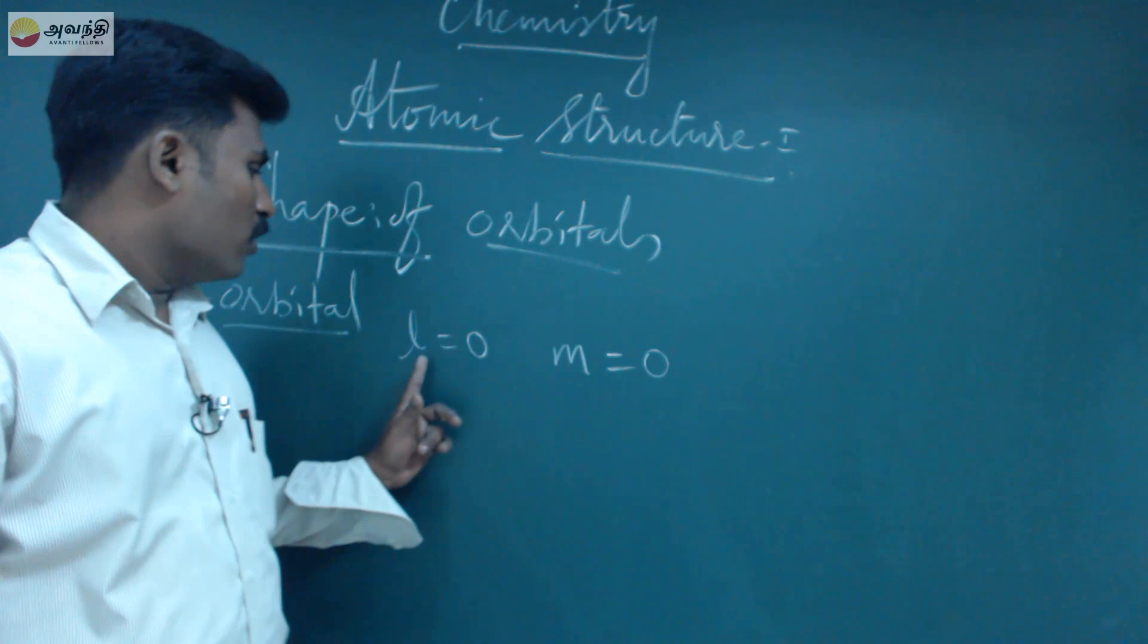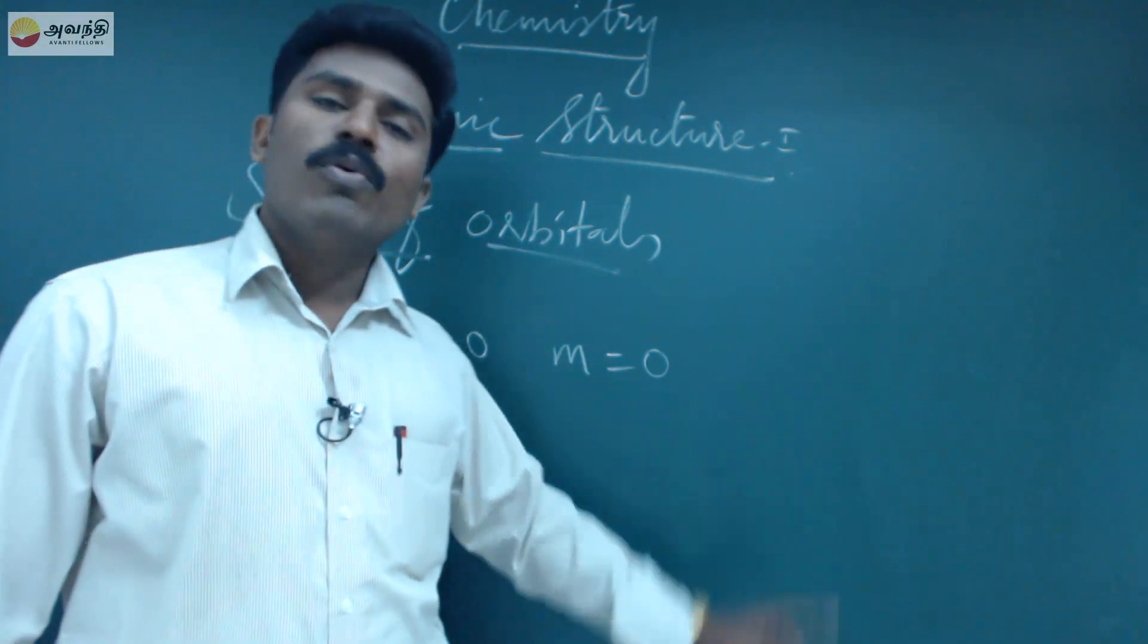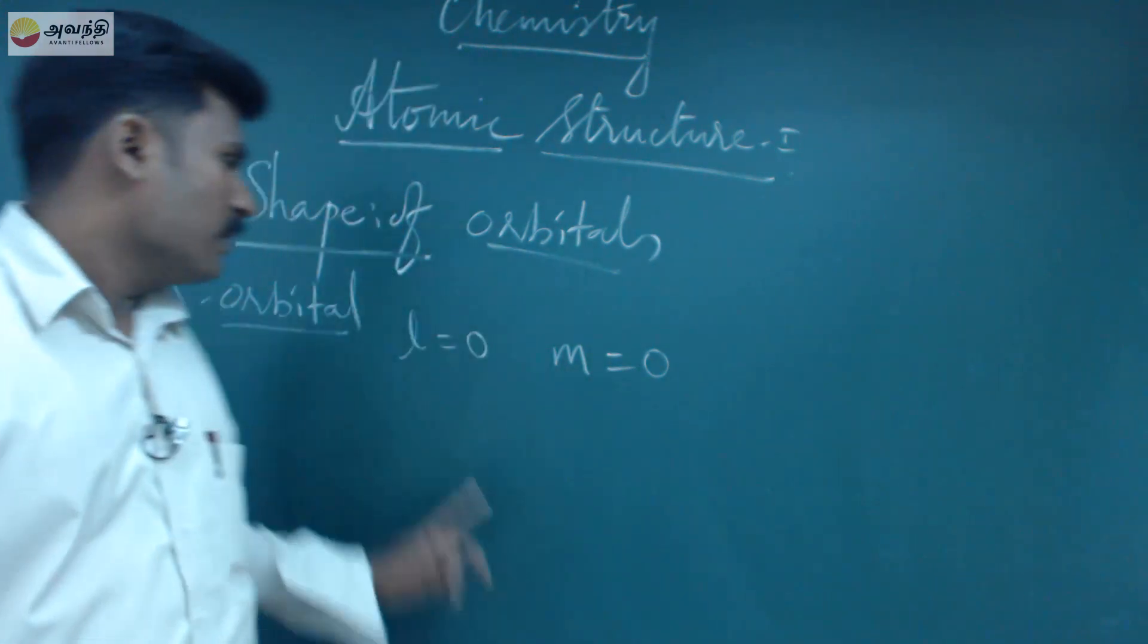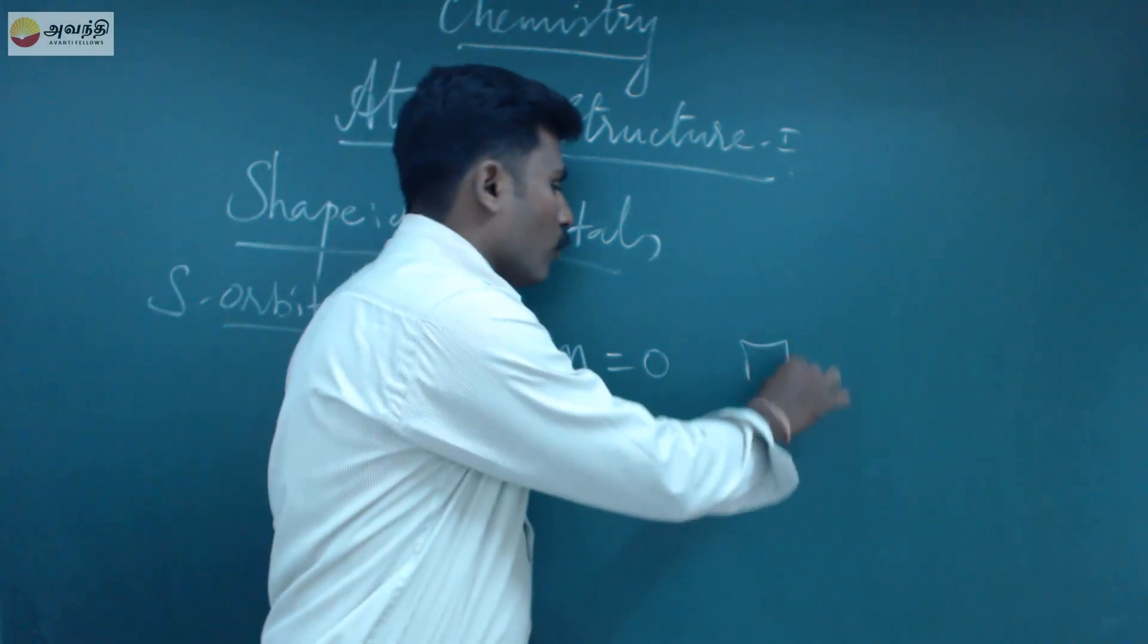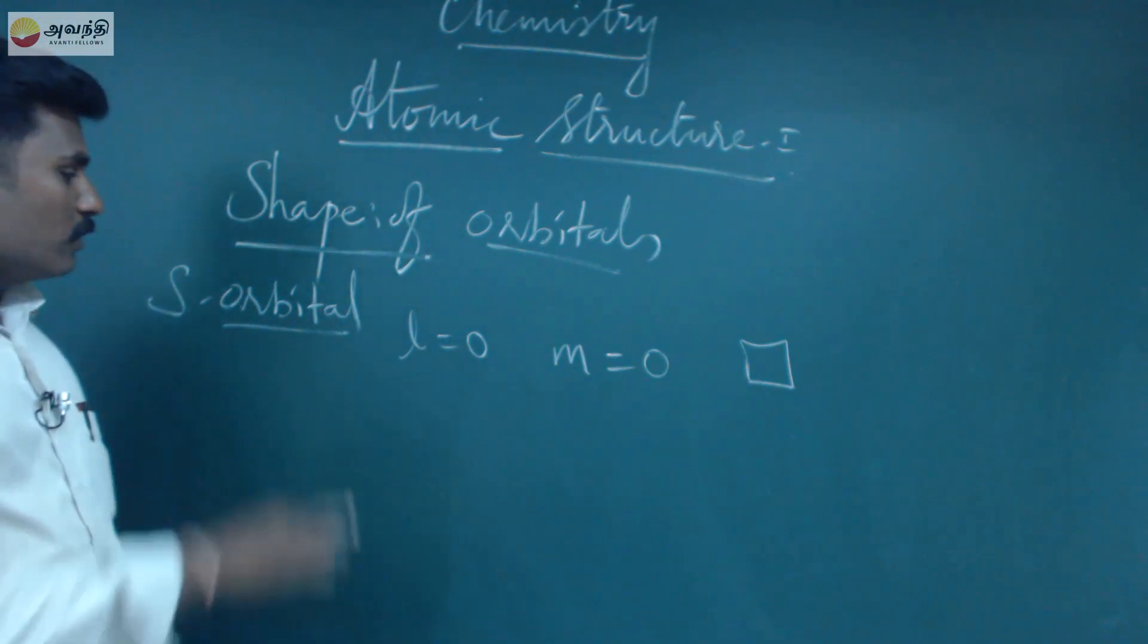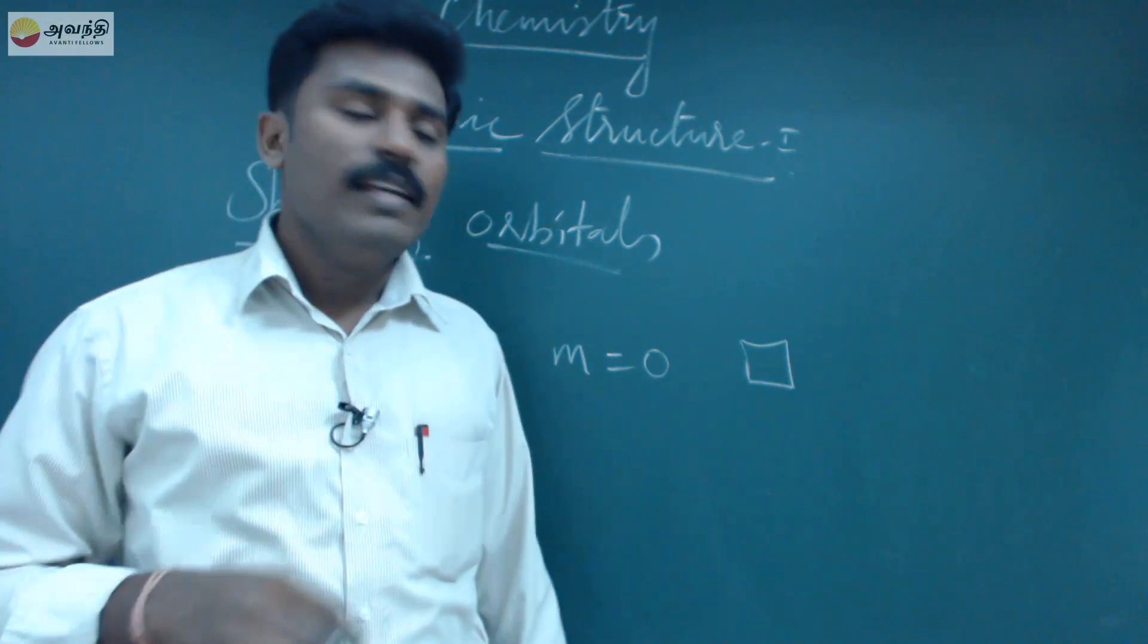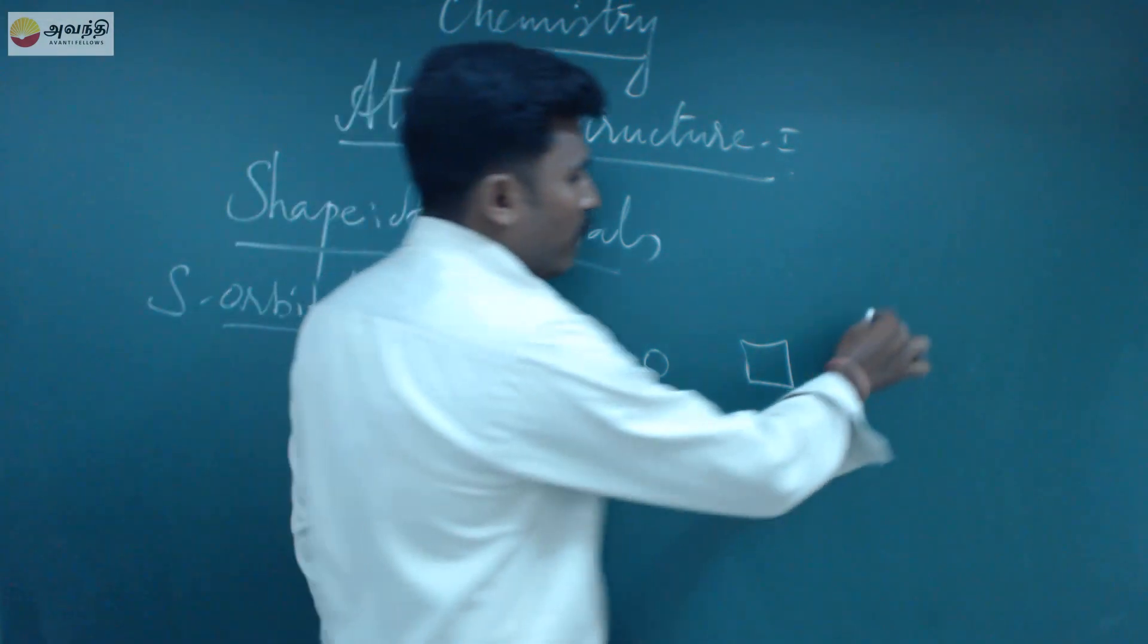For azimuthal quantum number zero, the magnetic quantum number is also zero, meaning there is no orientation. This indicates the s orbital becomes only one orbital. The s orbital is symmetrically spherical in shape.